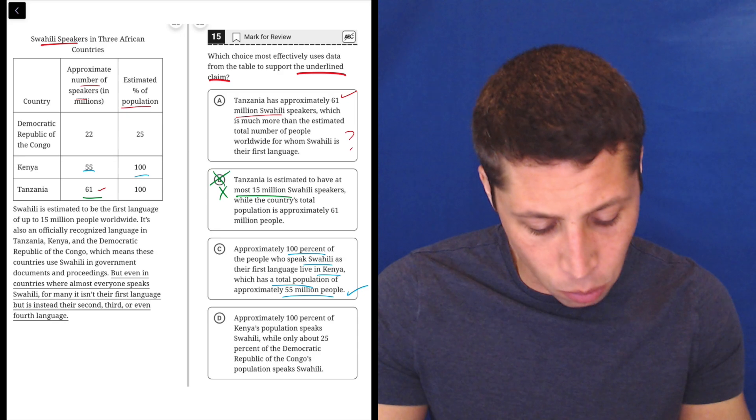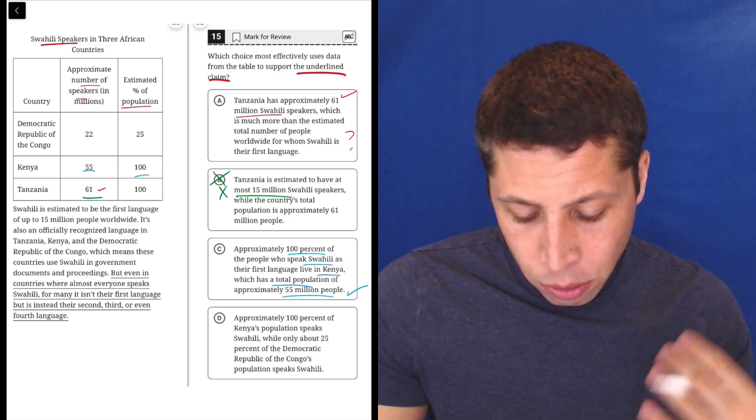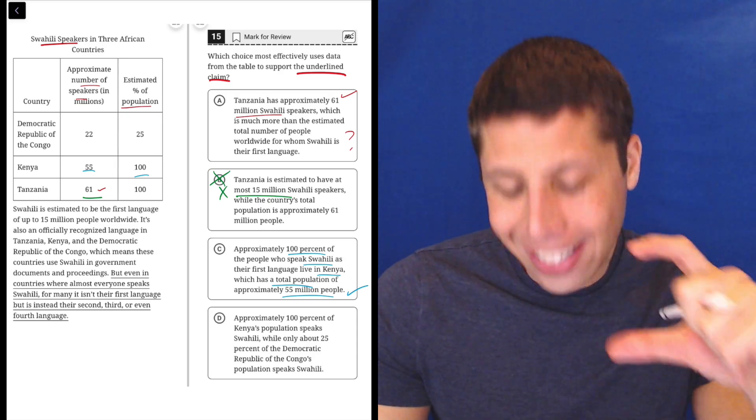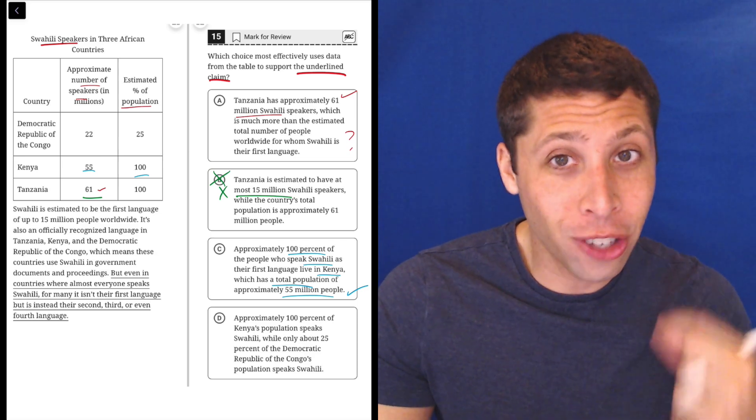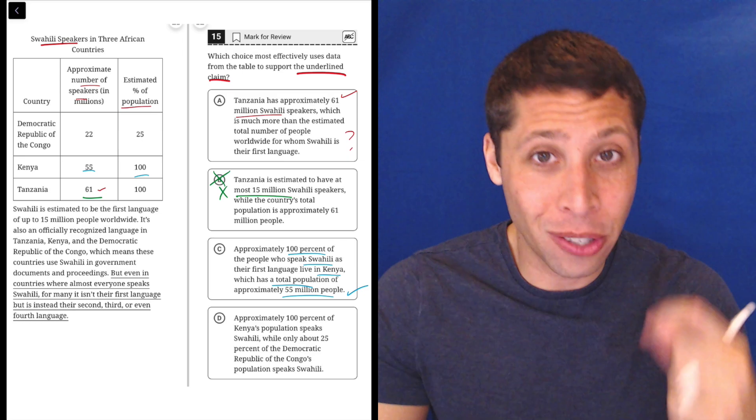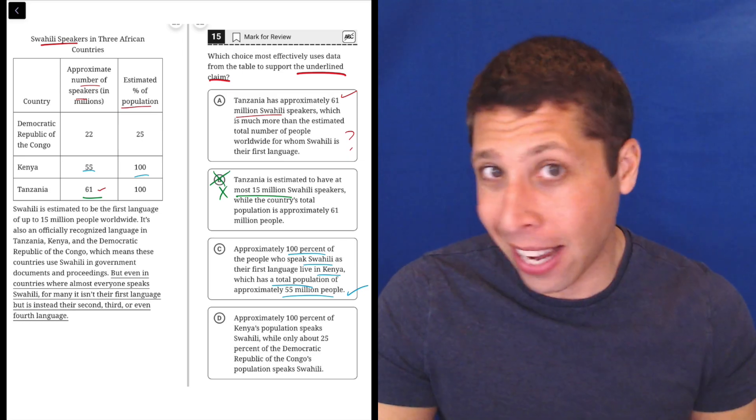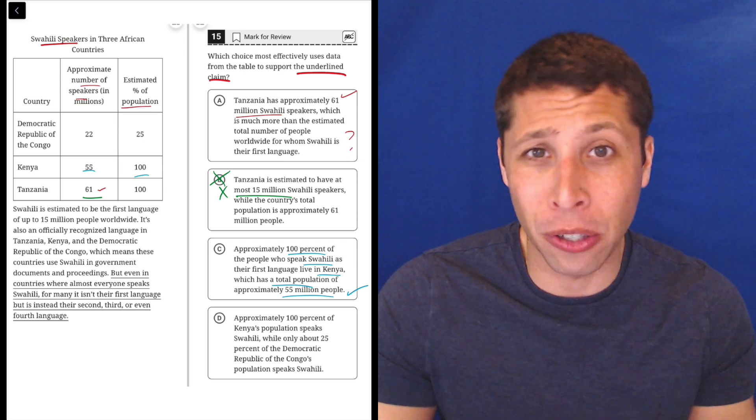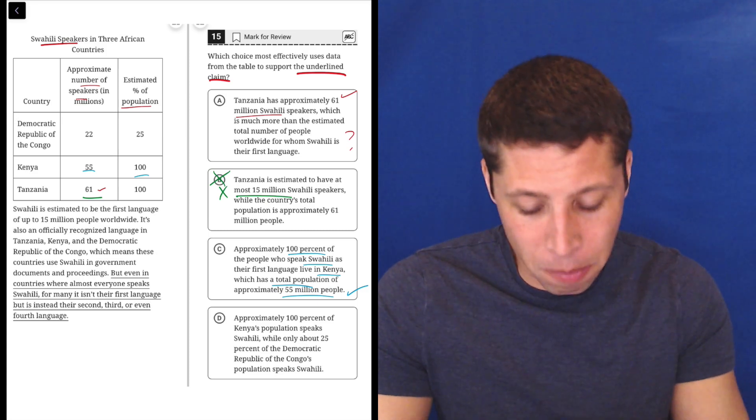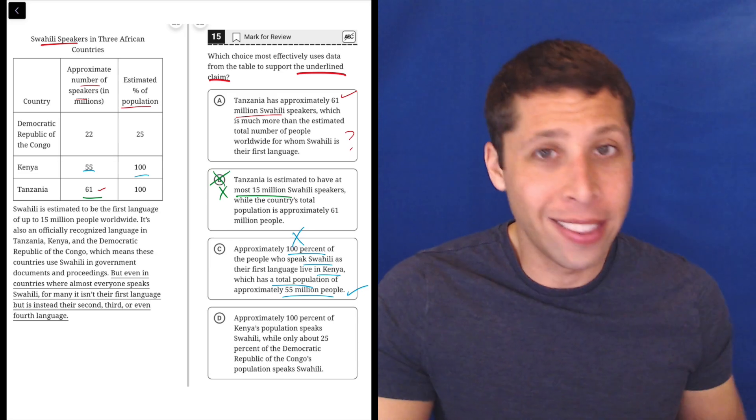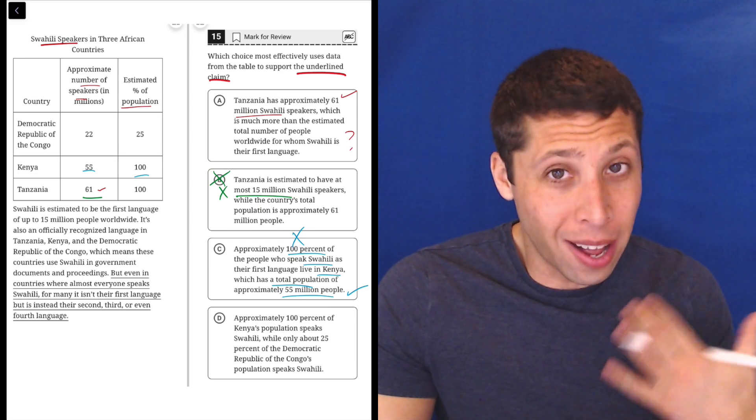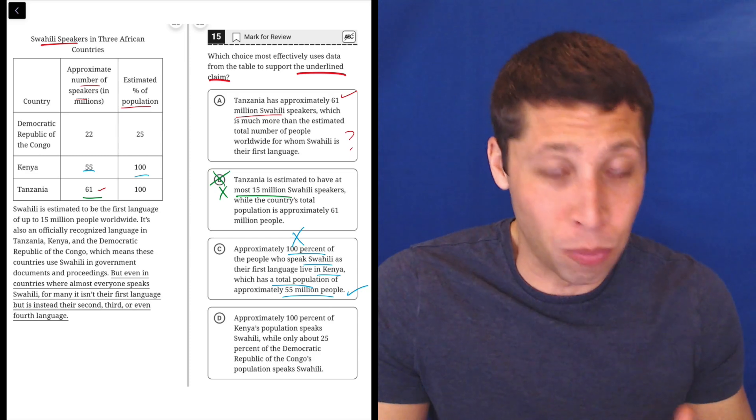Approximately 100% of the people who speak Swahili as their first language live in Kenya. Well then why do we have these other countries in this chart, right? The Congo and Tanzania, what are they doing there? Now notice, this chart is not saying anything about whether Swahili is someone's first language or not. It's just saying whether they speak it and then what percent of the population speaks it. We don't know anything about them being their first, second, third language. So this is just a misinterpretation of the data in the chart.